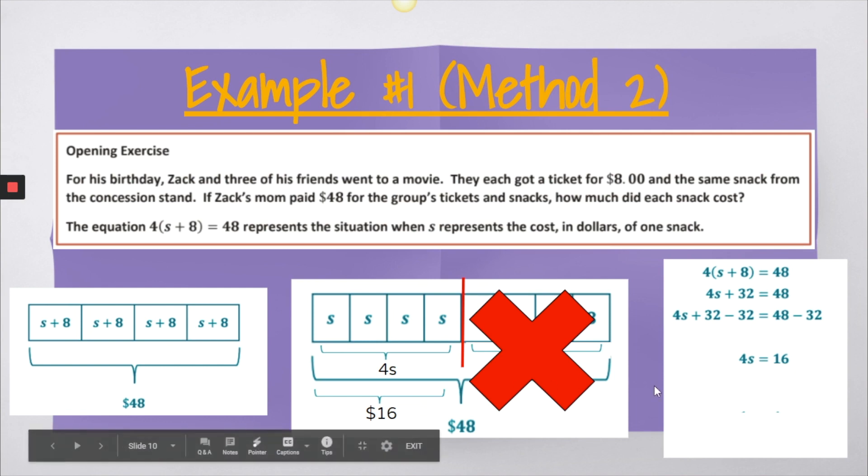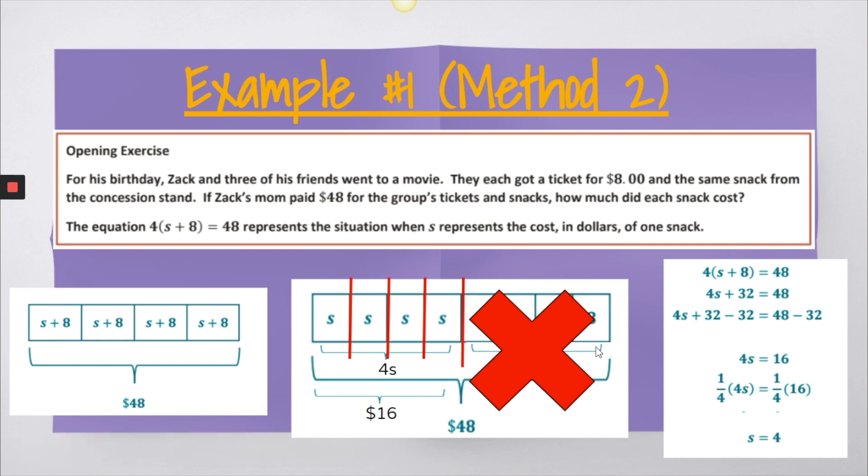So this 4S is the same thing as the $16. And now, once again, I have a one-step equation. I'll divide both sides by 4, dividing this into 4 equal sections. And if I divide this into 4 equal sections when I do the same here, I'm going to end up with S is equal to 4. So the snacks cost $4 each. Once again, this could have been dividing both sides by 4 or multiplying both sides by 1 fourth. So these are the two different methods. And once again, I feel like it's important to demonstrate both of those to your students because some will see it one way and some will see it another.